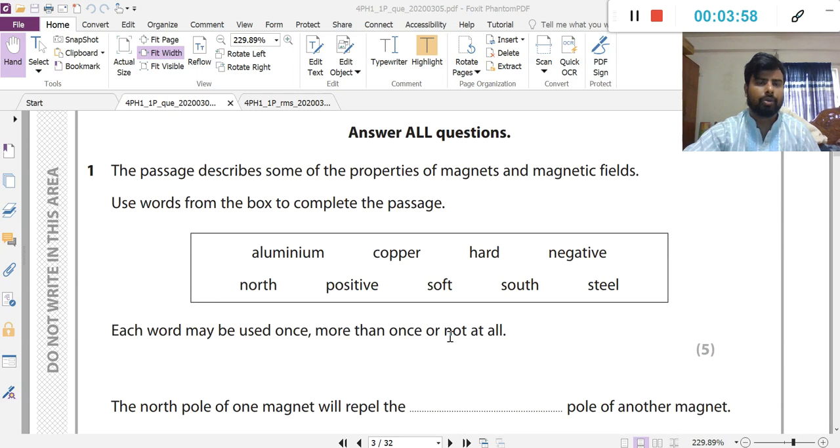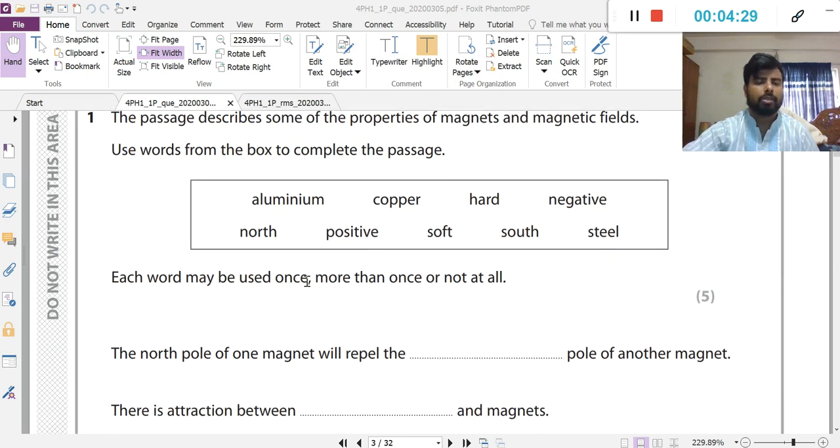First question, Question number 1. The passages describe some of the properties of magnets and magnetic field. Use words from the box to complete the passages. So the question is about properties of magnets and magnetic field related. There are some keywords. Each word may be used once, more than once or not at all.